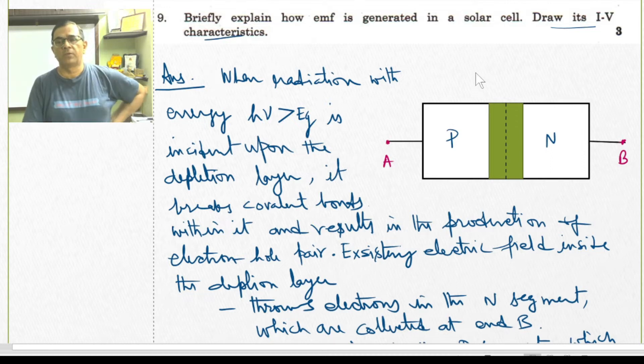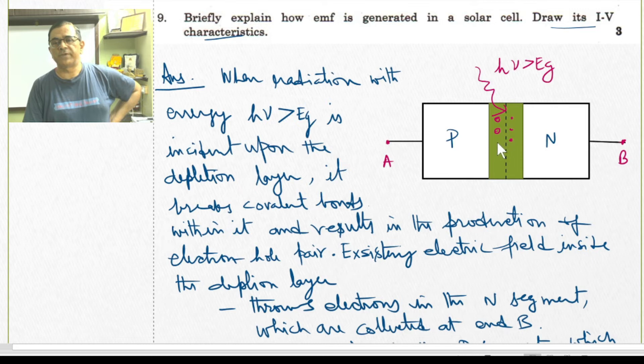When solar radiation is incident upon the depletion layer such that H nu greater than the energy gap, then it breaks covalent bonds within the depletion layer, which results in the production of electron hole pair. Darts represent the electrons and the small circle represents the hole.